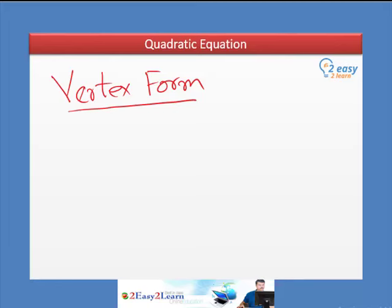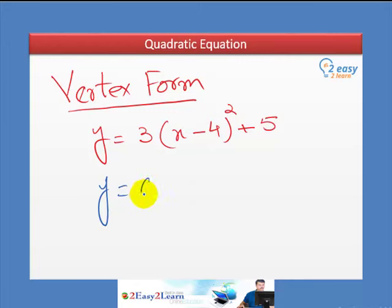So, when we write it in the complete square form, we call it a vertex form. For example, y equals 3 times x minus 4 whole square plus 5. So, this is a complete square form and this is a way of identifying this is a vertex form. If you want to write in a general vertex form, y equals a times x minus h whole square plus k. We will apply these different forms of quadratic equation in upcoming lessons and exercises.